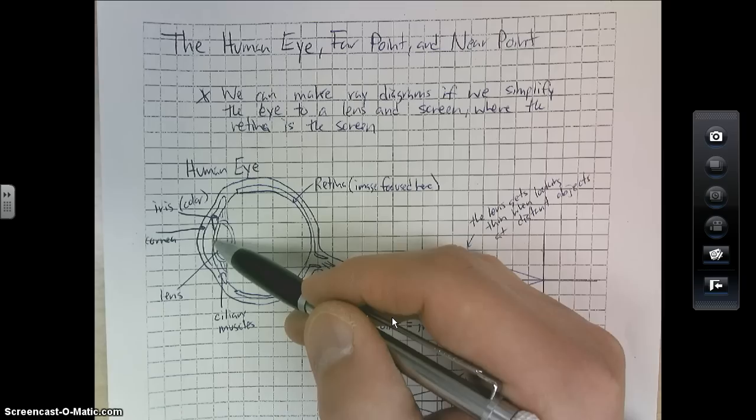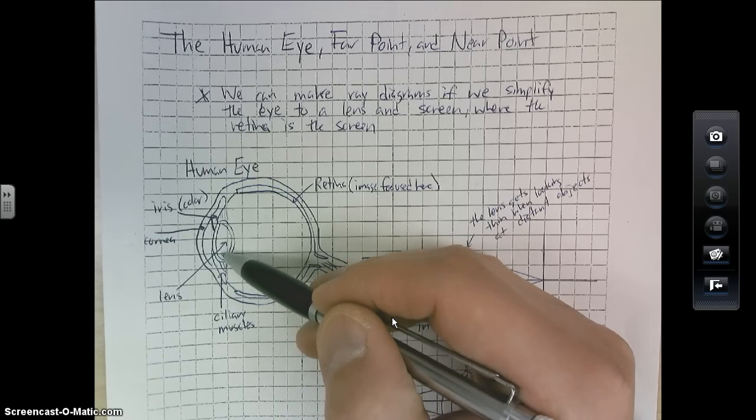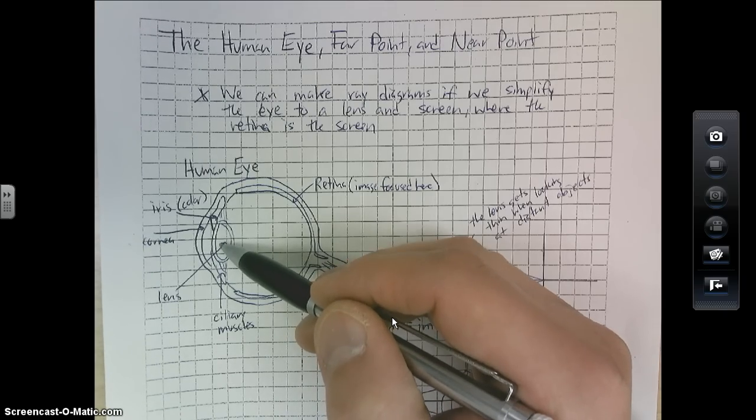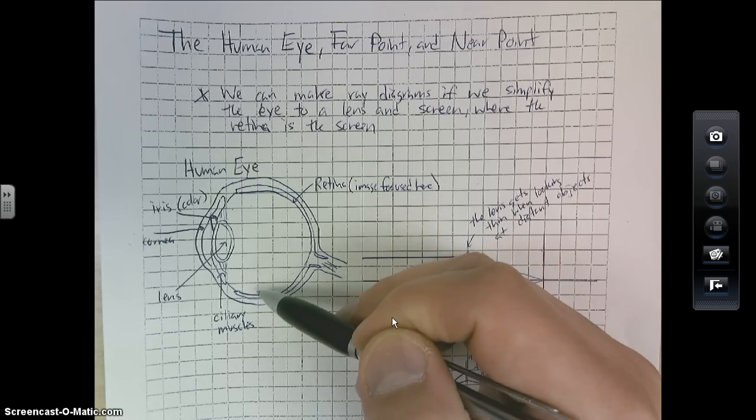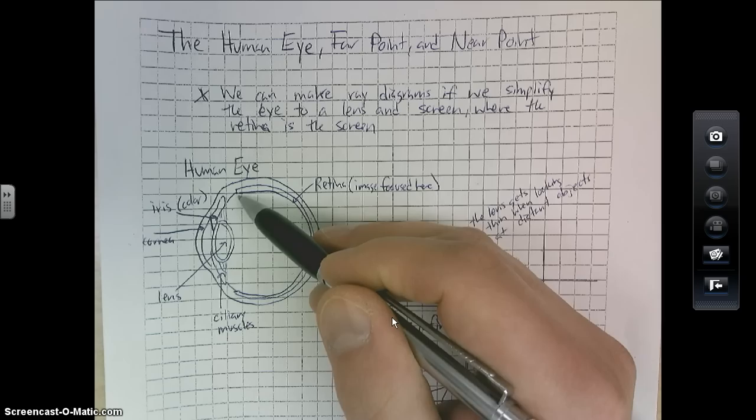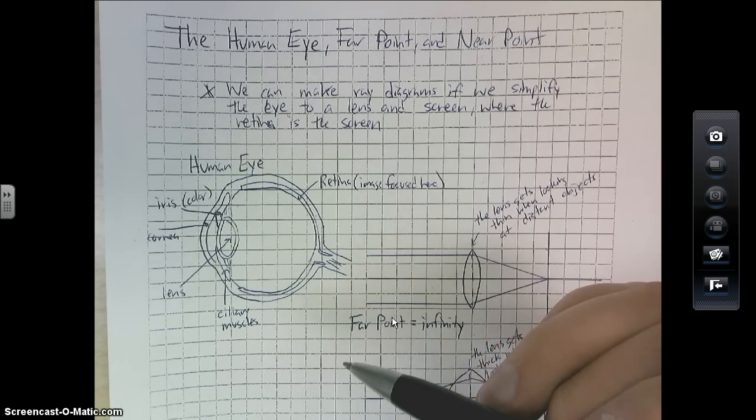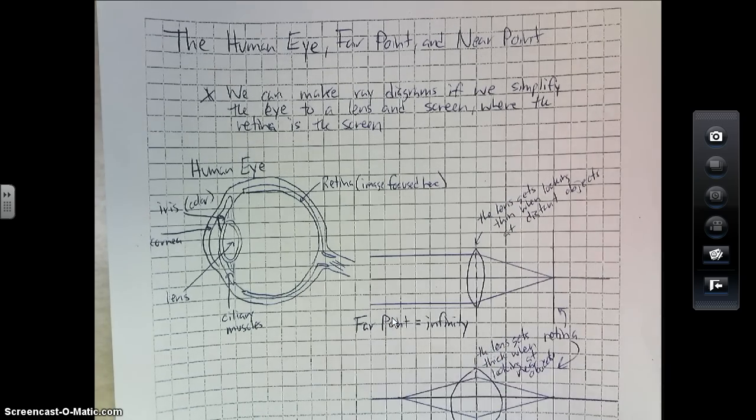Light comes in through here into the lens, and then the lens will focus it on this surface along the back known as the retina. So that's where the image actually gets focused, and that's how your brain will perceive that particular light.